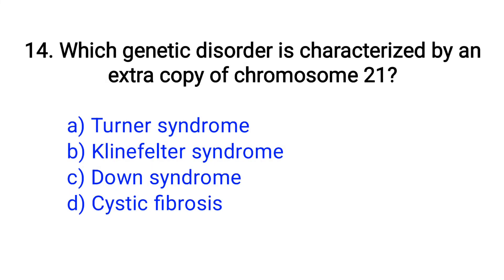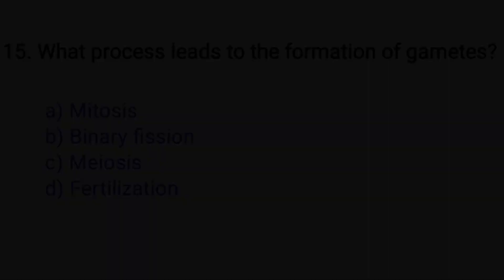Question number 14. Which genetic disorder is characterized by an extra copy of chromosome 21? Option A: Turner syndrome, B: Klinefelter syndrome, C: Down syndrome, D: Cystic fibrosis. The right answer is Option C: Down syndrome.